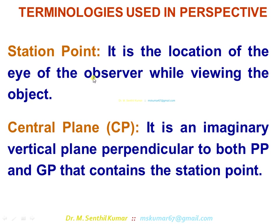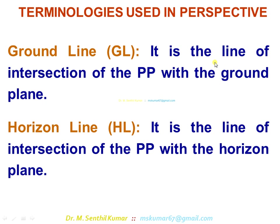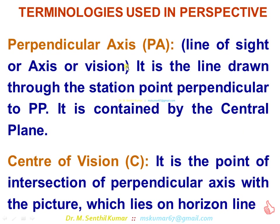Station point: it is the location of the eye of the observer while viewing the object. Central plane CP: it is an imaginary vertical plane perpendicular to both the picture plane and the ground plane that contains the station point. Ground line: it is the line of intersection of PP with the ground plane. Horizon line: it is the line of intersection of PP with the horizon plane. Perpendicular axis or axis of vision: it is the line drawn through the station point perpendicular to PP, and it is contained by the central plane. Center of vision: it is the point of intersection of the perpendicular axis with the picture plane, which lies on the horizon line.